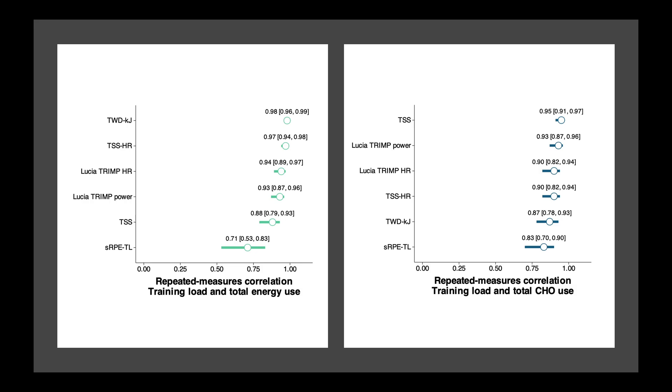So this shows us the correlation values between each measure of training load and total energy use on the left and total carb use on the right. The higher the value, the more these measures are correlated with one being a perfect correlation. The first number shown is the estimate, and the numbers in brackets are the 95% confidence intervals. The key takeaway is that all measures of training load are quite well correlated with both carb and calorie expenditure, but total work done and heart rate based TSS are the most highly correlated with total energy expenditure, and TSS, which is power based, has the best correlation with carb use.